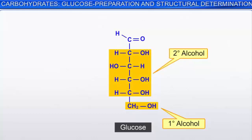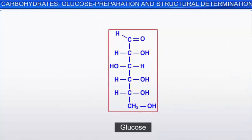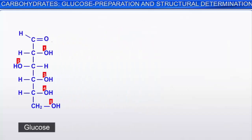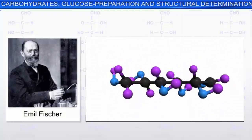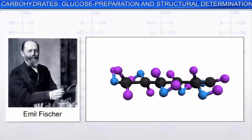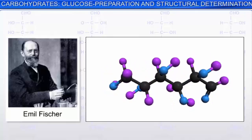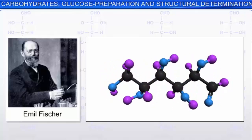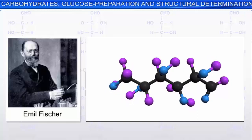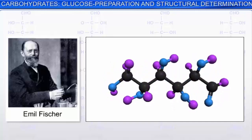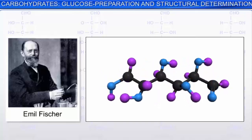Hence, the open chain structure that can be assigned to glucose is as shown. As this structure possesses four asymmetric carbons, there are 16 possible stereoisomers. Emil Fisher established the configuration of naturally occurring dextrorotatory glucose. It was truly an intellectual feat to identify which of the 16 possible stereoisomers of aldohexoses matched the structure of naturally occurring dextrorotatory glucose. Fisher won the Nobel Prize for this in chemistry in 1902.